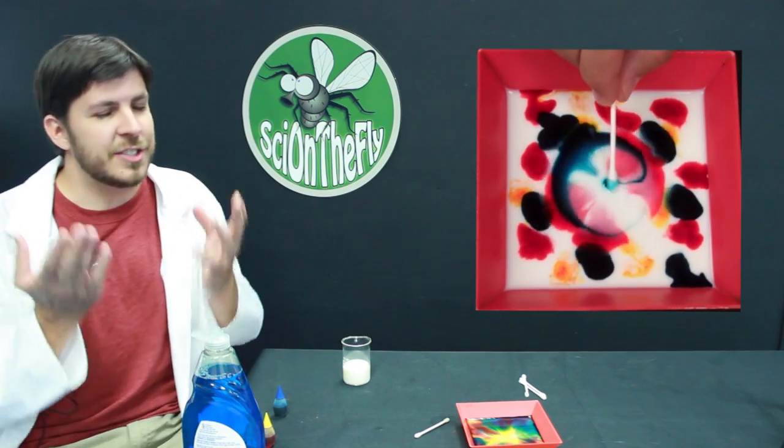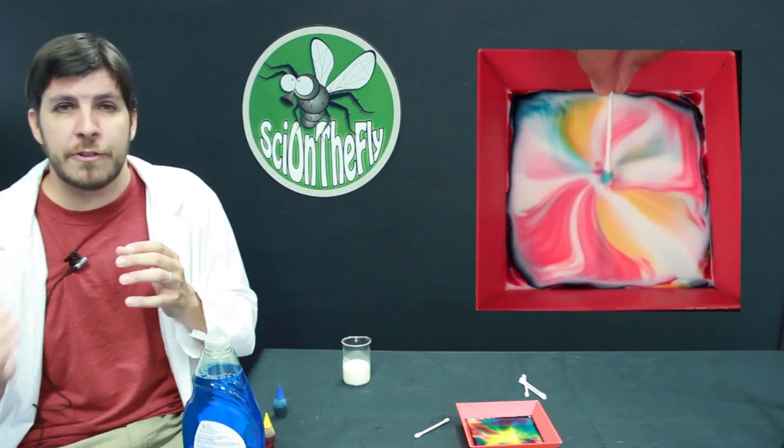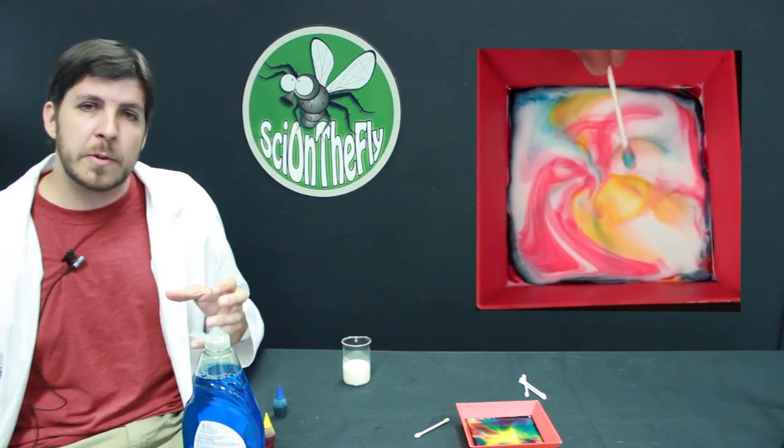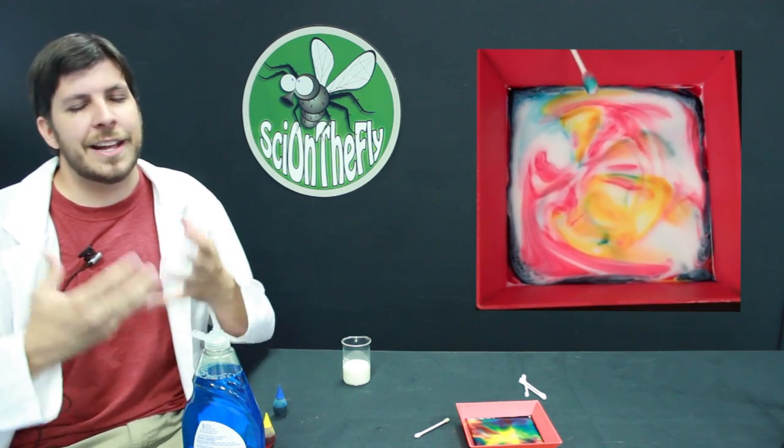Now the food coloring is added just so that we can see it. If we just have milk and soap, the exact same thing is happening. The hydrophobic end is repelling from the water, it's clinging on to the fat, but we can't see a single thing.